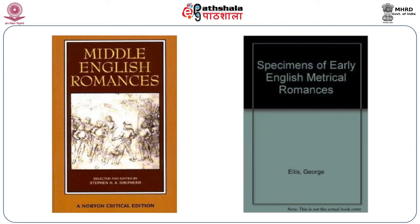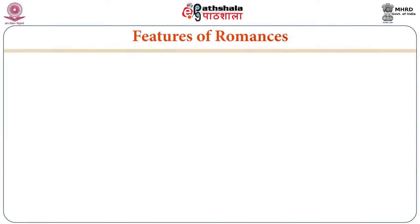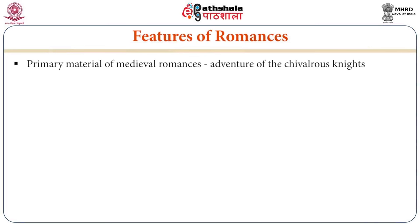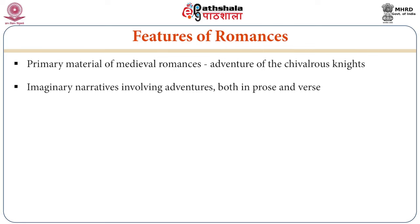Looking at the first slide, there are two side-by-side books given: Middle English Romances and Specimens of Early English Metrical Romances. Regarding the primary material of medieval romances: first, they are adventures of chivalrous knights — that is, adventure stories. Second, they are imaginary narratives — never factual. They evolve out of adventures in both prose and verse, meaning they are prose as well as verse narratives.